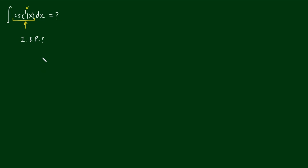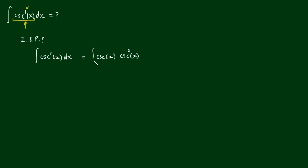If I do use a bit of algebra, let's write cosecant cubed of x as being equal to cosecant of x times cosecant squared of x. This is just using our index rules, and now applying the integral to both sides: the integral of cosecant cubed of x is equal to the integral of cosecant of x times cosecant squared of x.